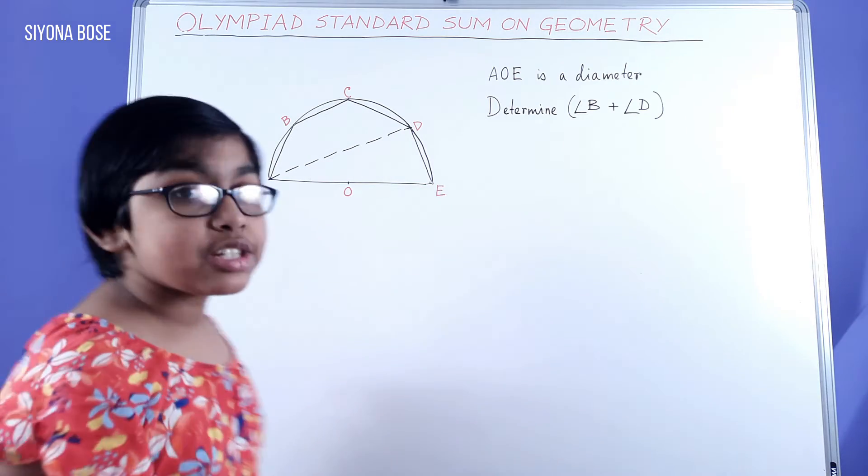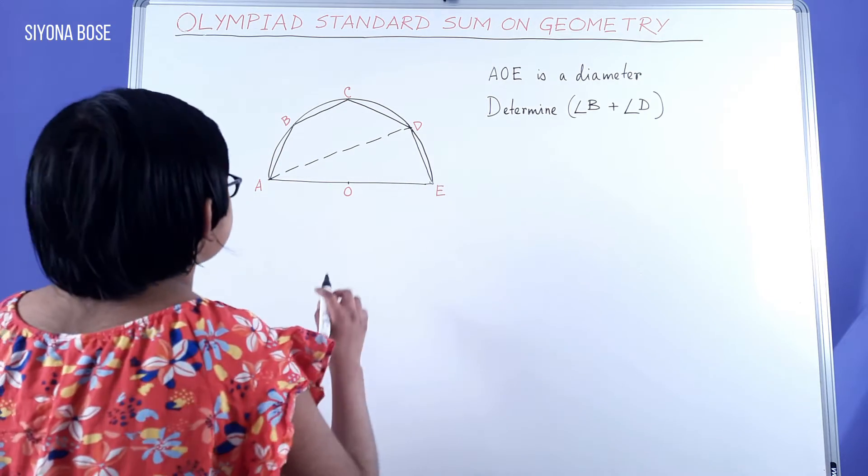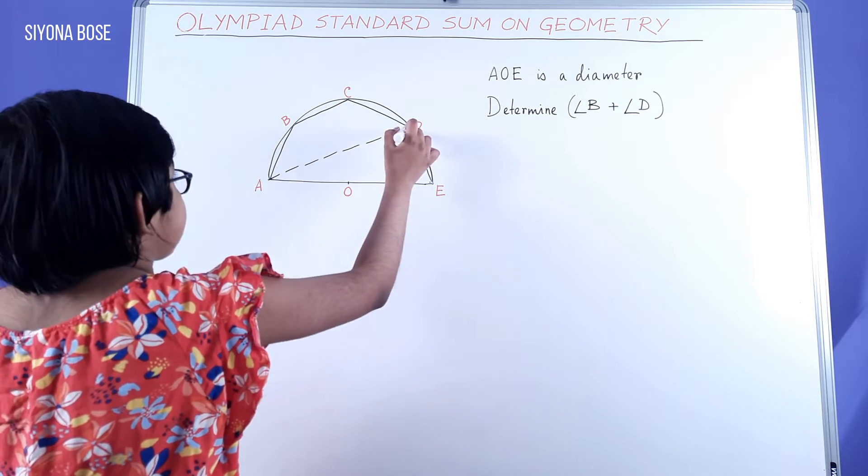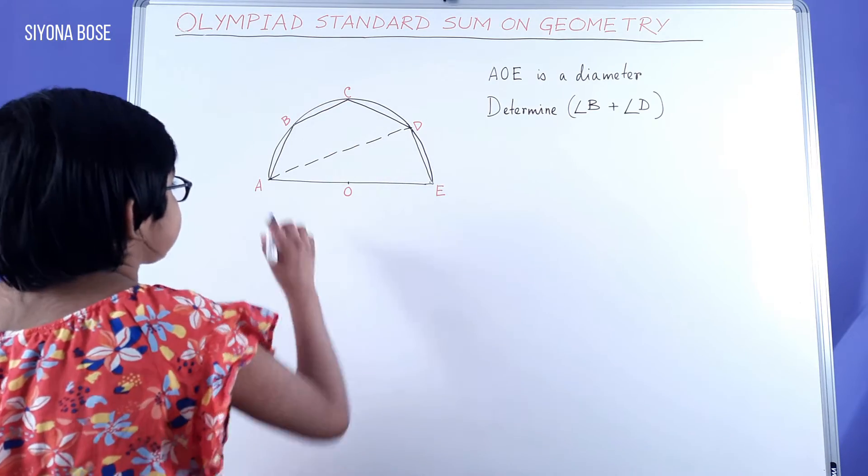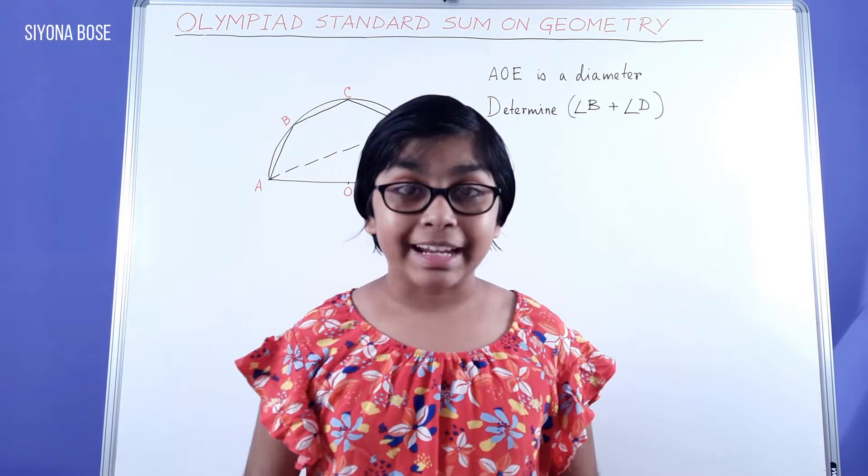So here we have two pairs of opposite angles. The first pair is angle BAD and angle BCD, and the other pair is angle ABC and angle ADC. So we will use the second pair.